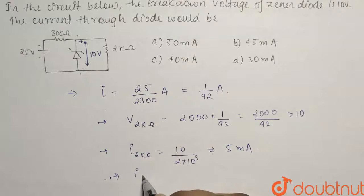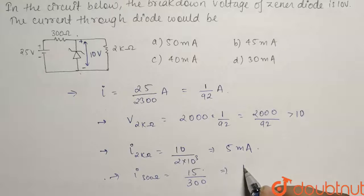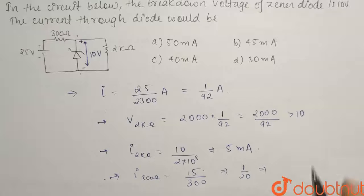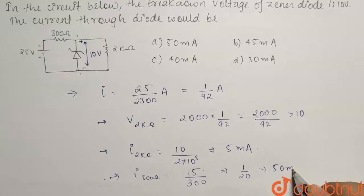So I_300Ω will be equals to nothing but the 15 volts divided by the resistance that is equals to 300. So it comes out to be equals to 1 by 20 which can also be written as 50 milliamperes.